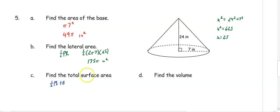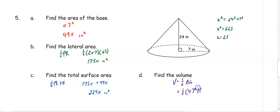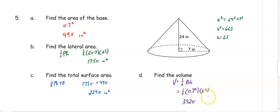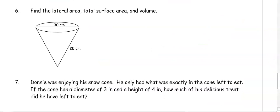For your total surface area it is one half perimeter times slant height plus the area of the base, which we've already done, so it's 175 pi plus 49 pi. We can add those together to get 224 pi inches squared. Your volume is one third base area times height, so it's one third times pi times seven squared times the height of 24. Put everything in the calculator except for your pi, and we get 392 pi inches cubed.